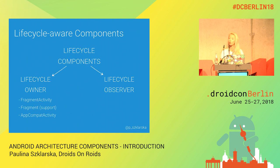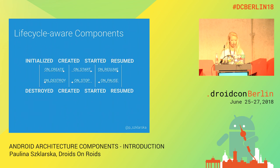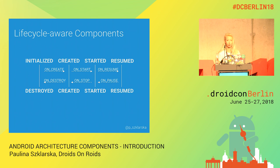Basically, we have two components. We have LifecycleOwner, which is basically anything that has a lifecycle — like an activity, fragment, or anything based on these, like ComponentActivity. On the other side, we have LifecycleObserver, which is anything that is interested in observing lifecycle changes. A LifecycleOwner can be in four different states: initialized, created, started, resumed, and destroyed. Between those states it can emit events, and a LifecycleObserver can subscribe to observe those changes and be notified every time there is a lifecycle change.